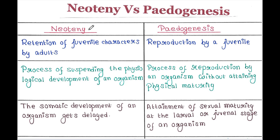So what is Neoteny? Basically, it is the retention of juvenile characters by adults. And what is Paedogenesis? It is the reproduction by a juvenile. So these two processes are just opposite, you can say.